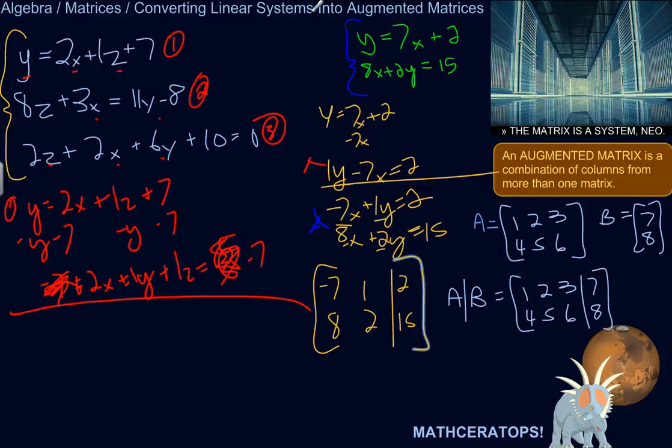Number two: 8z plus 3x equals 11y minus 8. Let's get x, y, and z all over on one side. Subtract the 11y, and then we'll put them in the same order. 3x plus negative 11y plus 8z equals negative 8. That's number two.